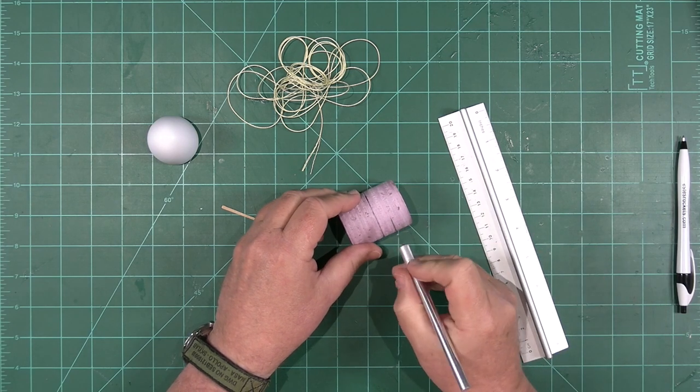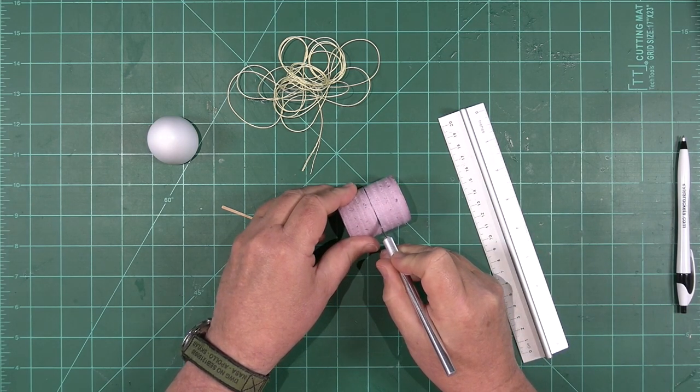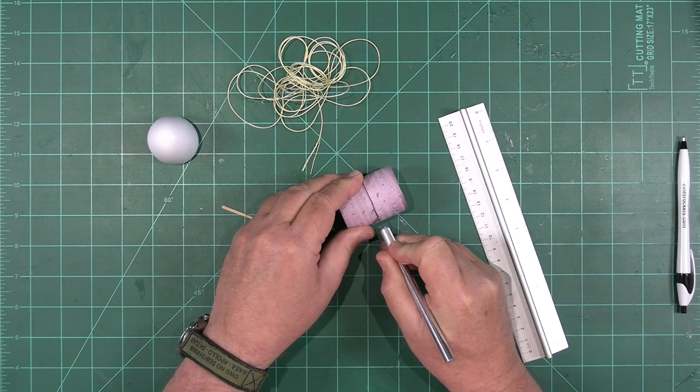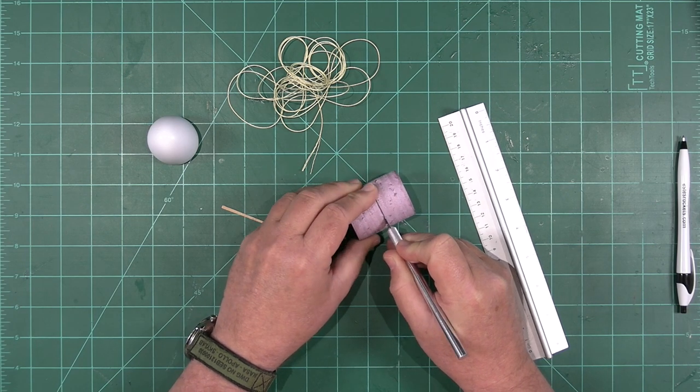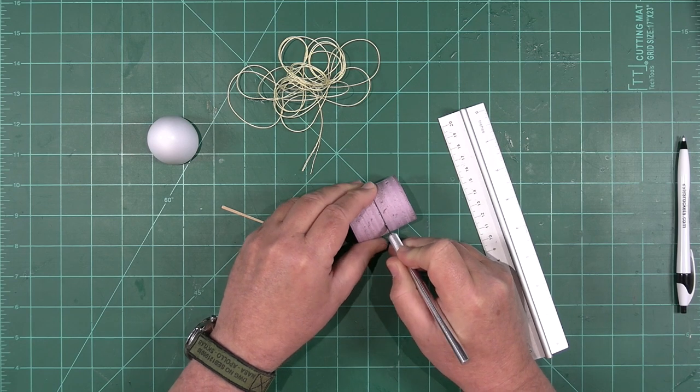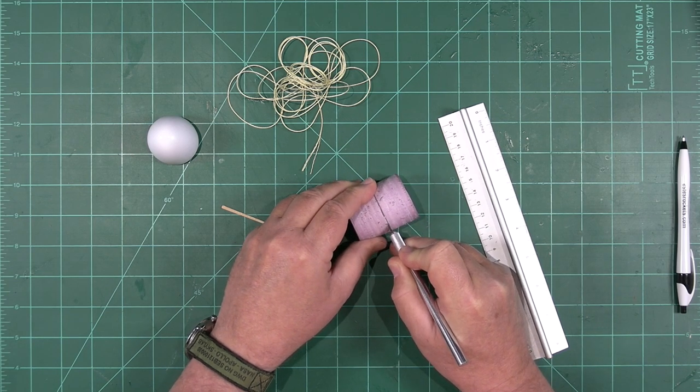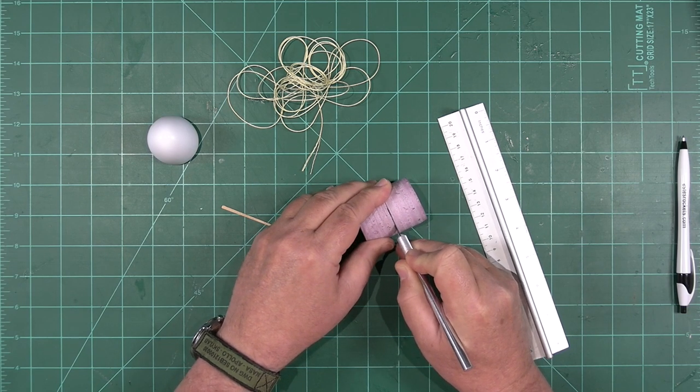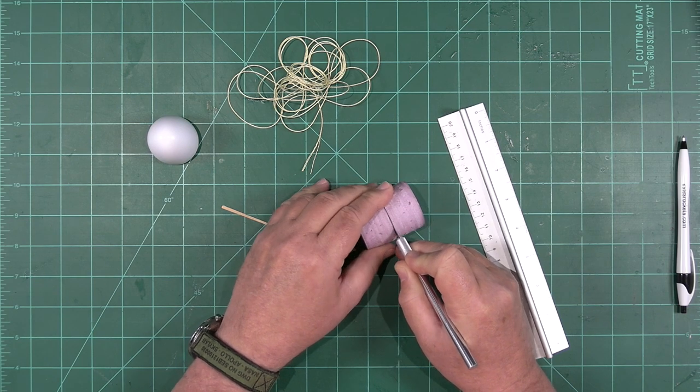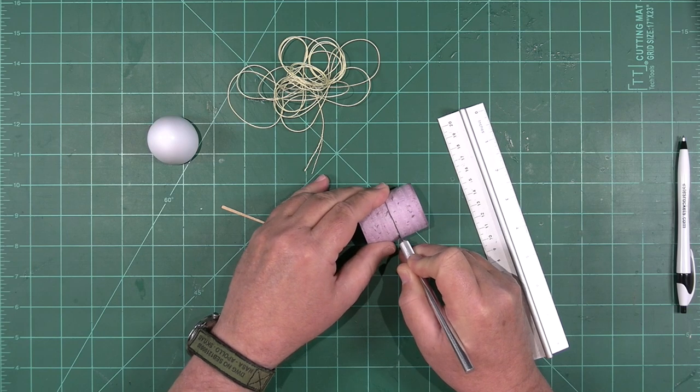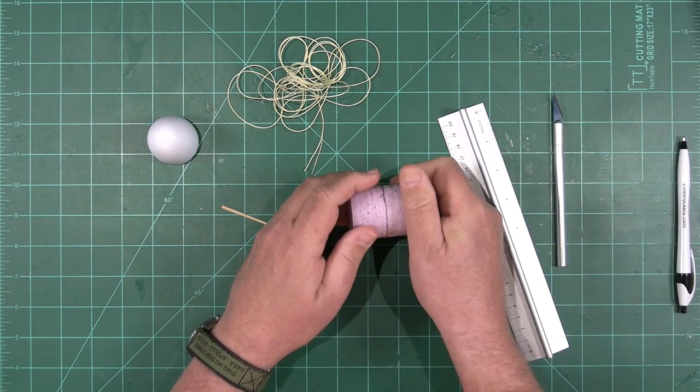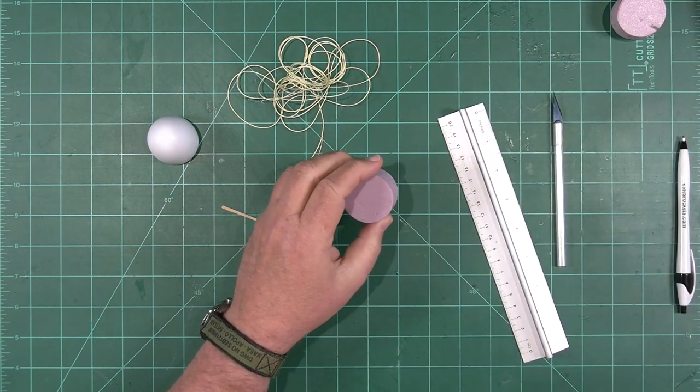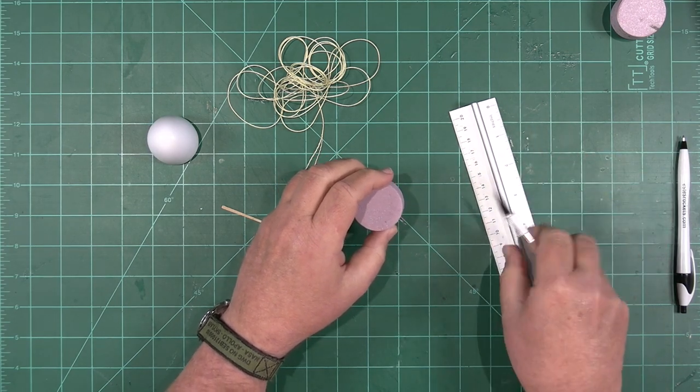Now I'm going to use my exacto blade to cut through the foam plug along that line. If you use a fresh blade, this will go very smoothly. It doesn't quite go all the way through, but you can just twist it and it will come apart. I'll set one half of that to the side. We're done with our blade and we're done with our ruler.